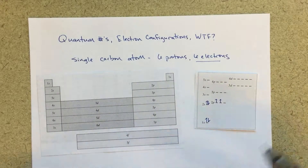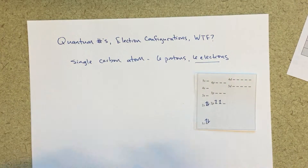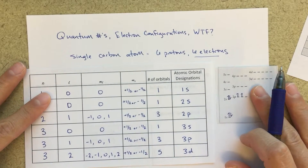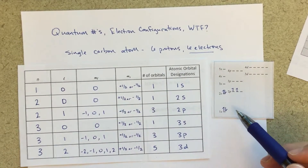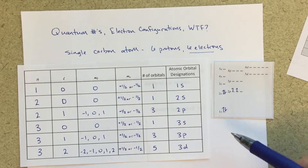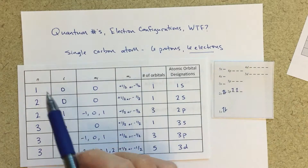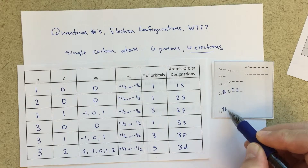So how do electron configurations relate to quantum numbers? The whole idea with quantum numbers is that each of these electrons in my carbon atom can be assigned a different set of quantum numbers. Each one of those electrons will have its own unique set of n, l, m sub l, and m sub s values that will correlate to those electrons.